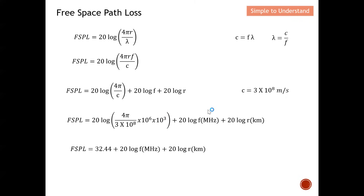The factor of 10 to the power of 6 accounts for frequency entered in megahertz, and 10 to the power of 3 accounts for distance entered in kilometers. So the final free space path loss equation is: FSPL = 32.44 + 20 log f (MHz) + 20 log r (km). This is the equation derived from the Friis transmission formula, and it will be applied to compute free space path loss in the examples.